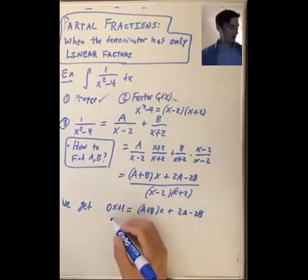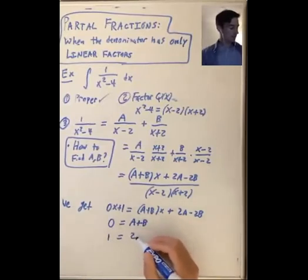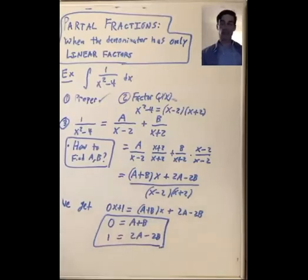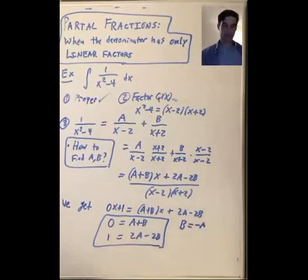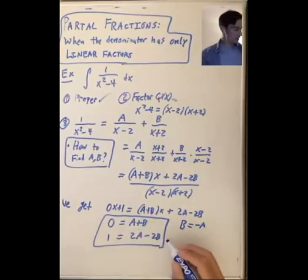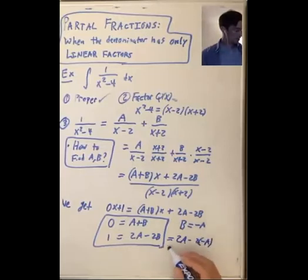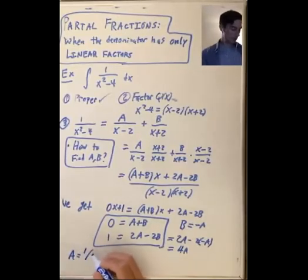This implies that 0 equals a plus b, and 1 equals 2a minus 2b. So we get two equations and two variables. The first one says that b equals negative a. So the second equation becomes 2a minus 2 times negative a, which is the same as 4a. So 4a equals 1, and we see that a equals 1/4 and b equals negative 1/4.